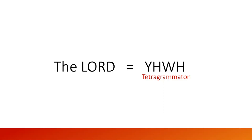Transliteration is different. Transliteration is when the language doesn't use our characters. We have A, B, C, D, E, F, G. In French they also use those same characters. But in Chinese, Hebrew, and Russian, they don't use the same characters we use. So if you want to learn how to pronounce a word in one of those languages, you need to transliterate it — make those characters into English alphabet characters.